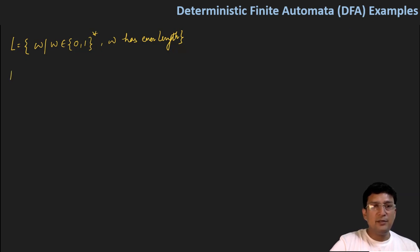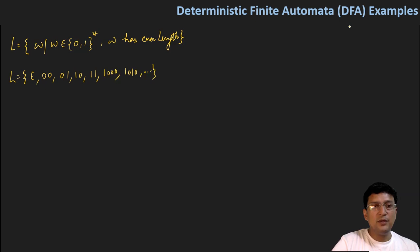First of all, let's make a language set. This is an even length language, so epsilon will be part of this. Then 00, 01, 10, and 11 will be part of this. Similarly, strings of length 4 like 1110 and 1010 will be part of this. This means all strings of even length: length 0, length 2, length 4, length 6, and so on.